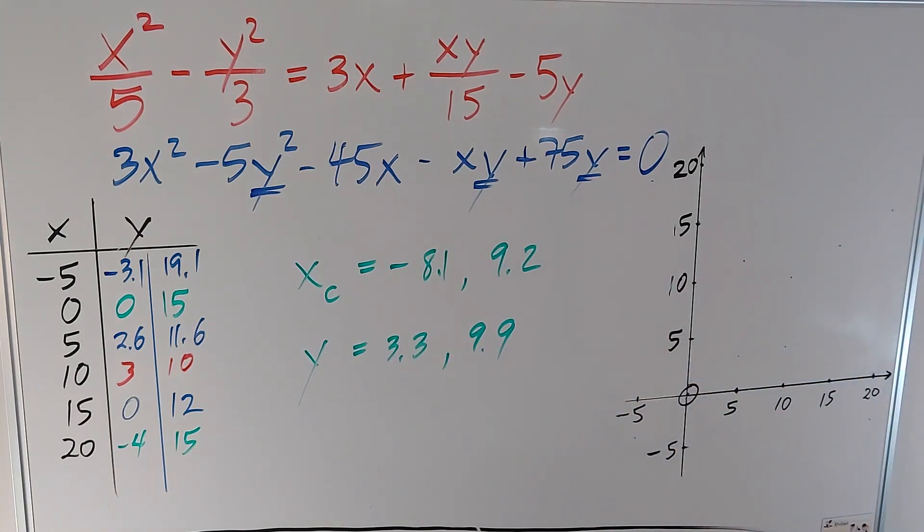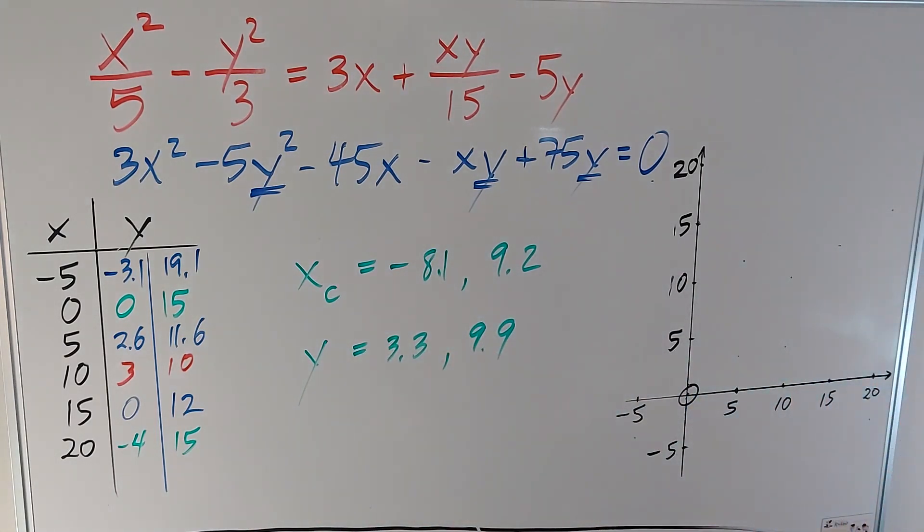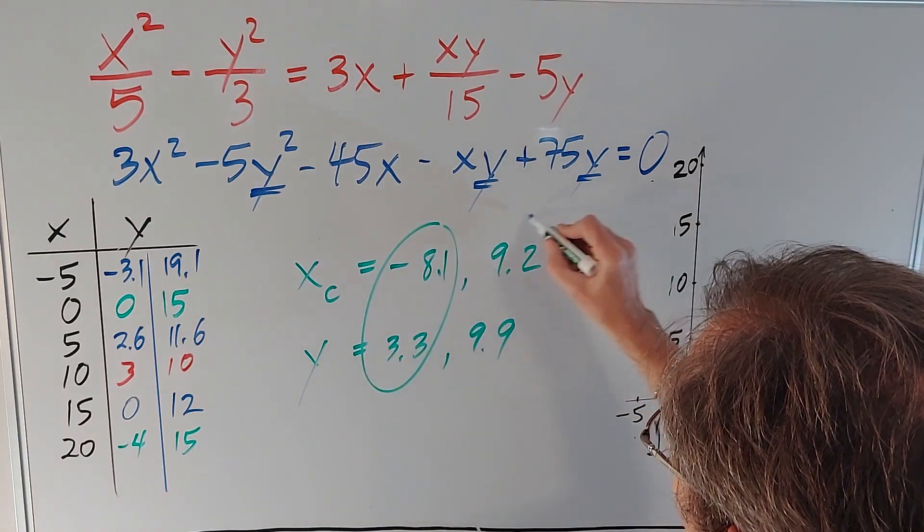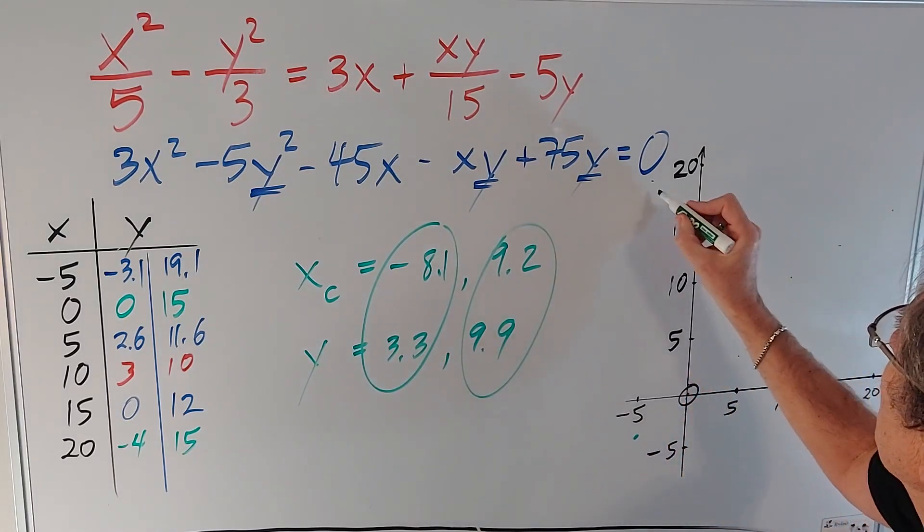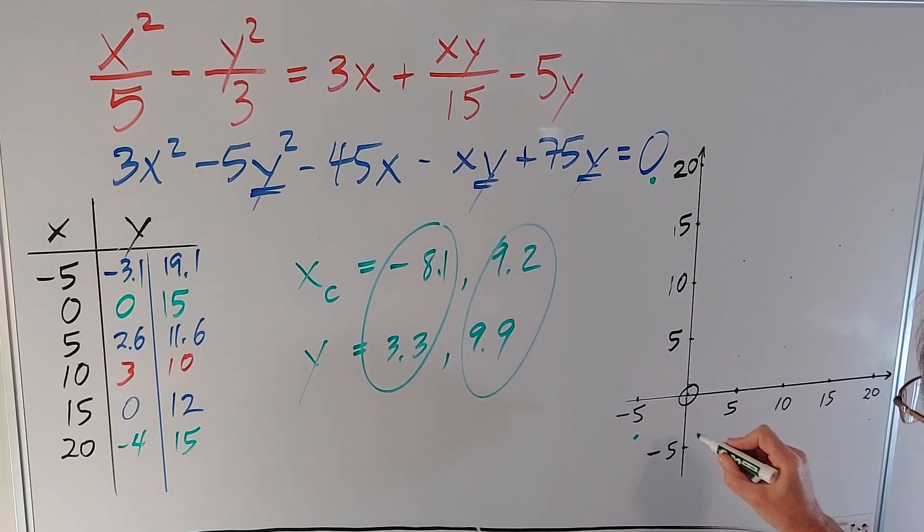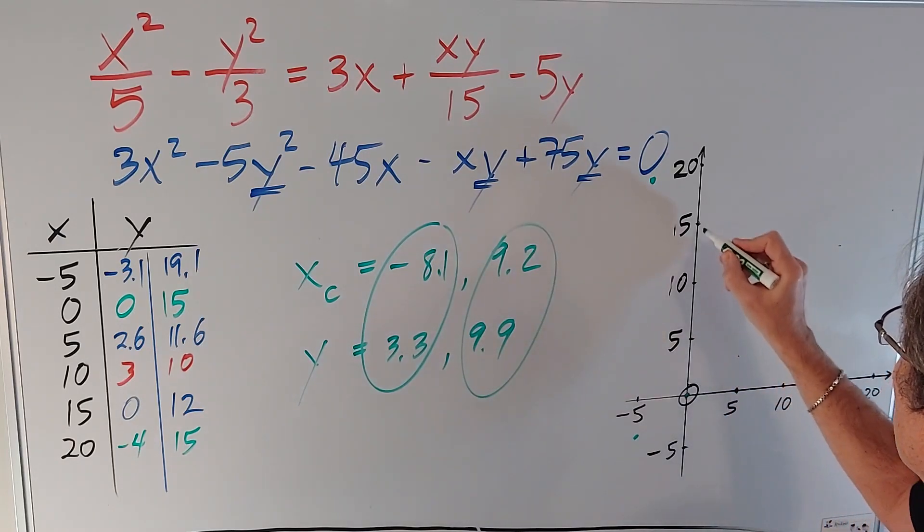So, now let's graph these points, and this point, and this point, and see what it looks like. So, starting with the table of values, I get roughly here, and roughly here, here, and here.